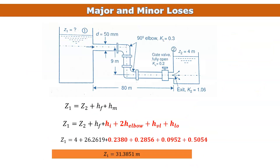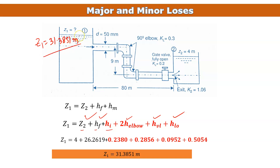Finally, z1 = z2 + hf + hm = z2 + hf + (entrance + 2 elbows + gate valve + exit effect). Plugging in all values, we get z1 = 31.3851 meters. This type of problem can also be reversed — if z1 is given, calculate major and minor losses. That's it, thank you.